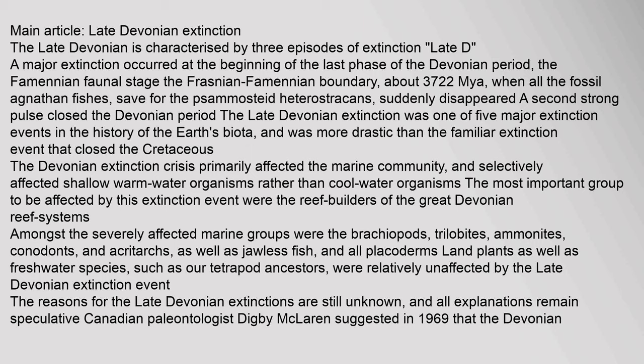The Late Devonian is characterized by three episodes of extinction. A major extinction occurred at the beginning of the last phase of the Devonian period, the Famennian faunal stage. The Frasnian-Famennian boundary, about 372.2 Maya, was when all the fossil agnathan fishes, save for the Sanmostiad heterostrackens, suddenly disappeared. A second strong pulse closed the Devonian period. The Late Devonian extinction was one of five major extinction events in the history of the Earth's biota, and was more drastic than the familiar extinction event that closed the Cretaceous.